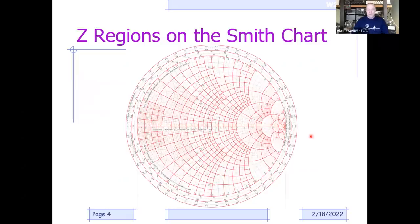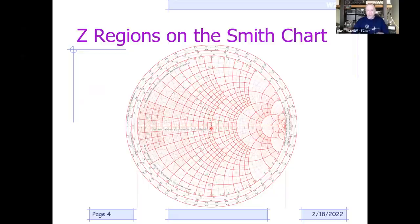The Smith chart is really just a fancy graph paper that's all curvy instead of straight. It's done that way because it aids in predicting SWR and what's going on with transmission line lengths. The inventor, Philip Smith, devised this curved graph paper to help ease those computations. But it really is just graph paper—we'll use it that way.